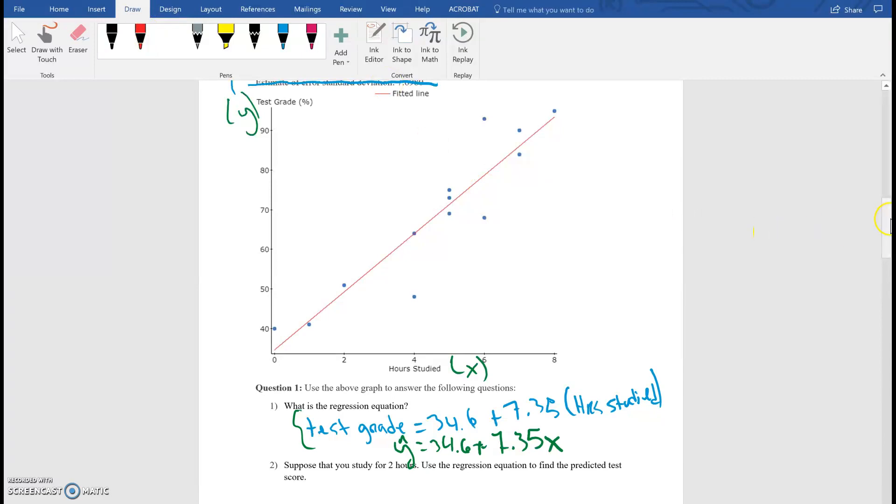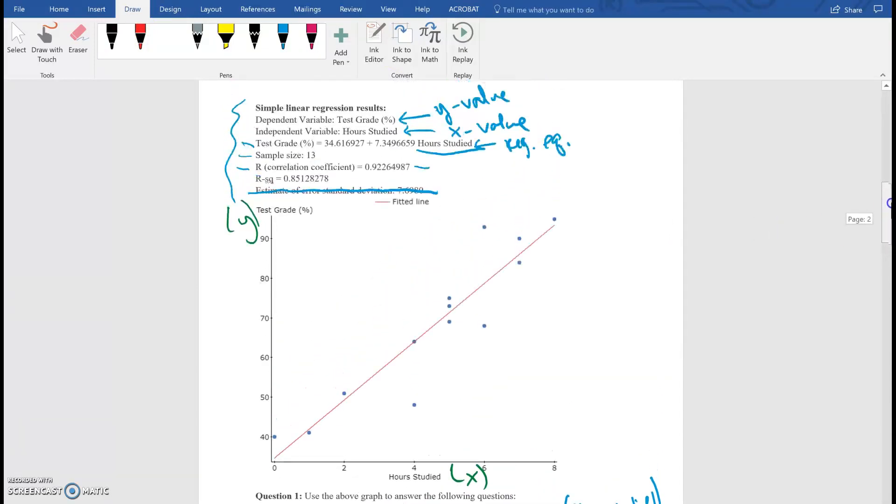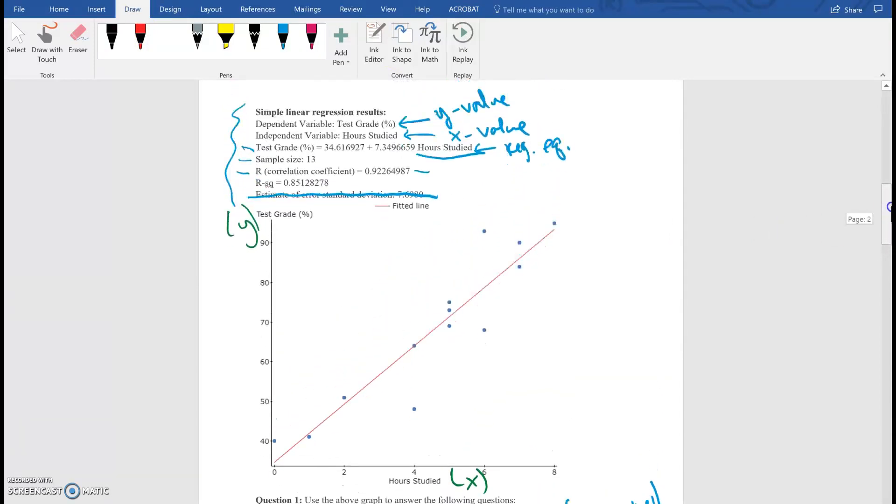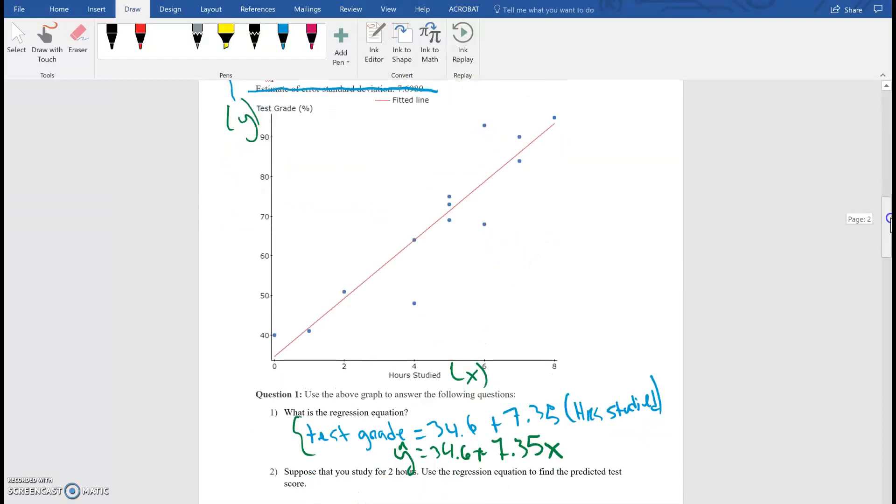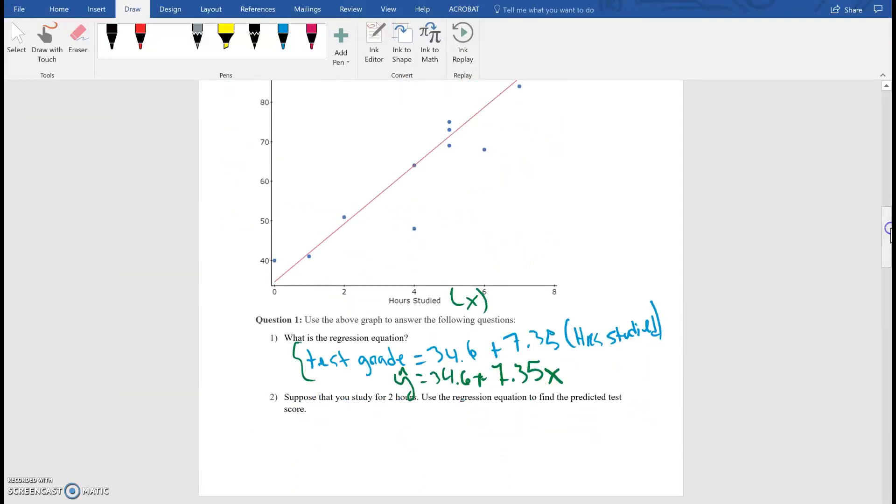So that's it. That's all you got to do. Just literally know how to read the output and answer the questions. So now it says, suppose that you study for two hours. Use the regression equation to find the predicted test score. So now I want to go ahead and study for two hours. So I'm going to use my model that StatCrunch just created for me. And I'm going to go ahead and figure out what my test grade is going to be.